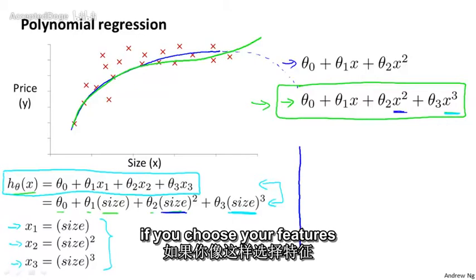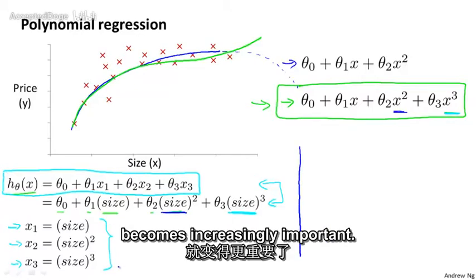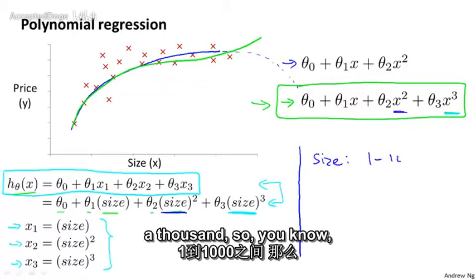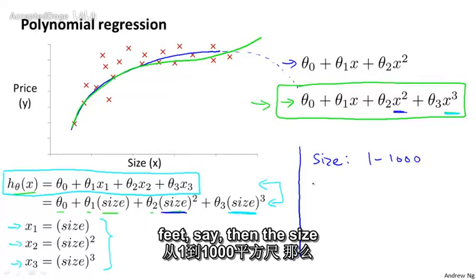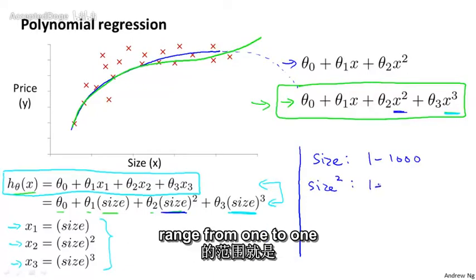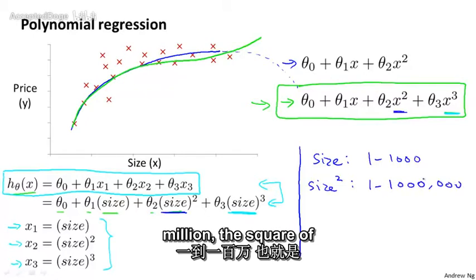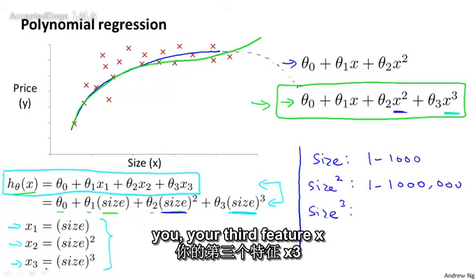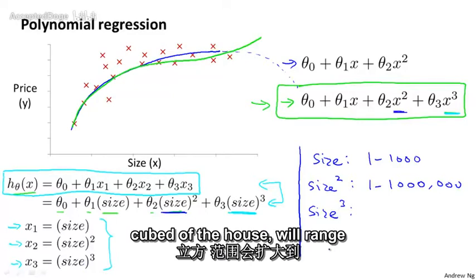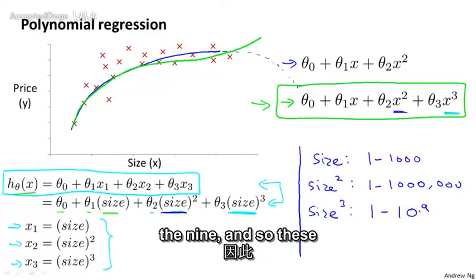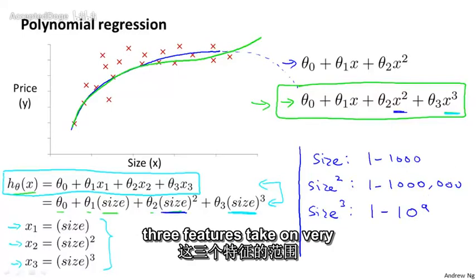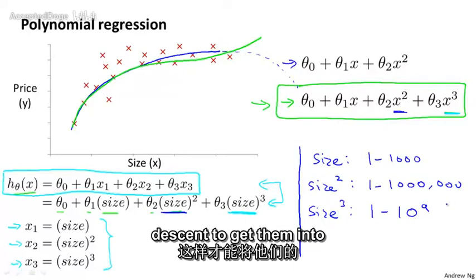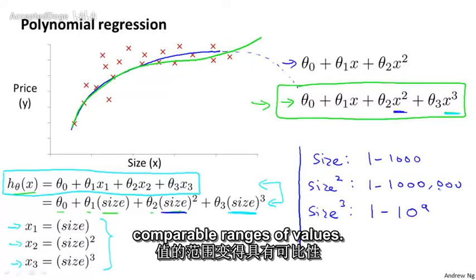I just want to point out one more thing, which is that if you choose your features like this, then feature scaling becomes increasingly important. So if the size of the house ranges from one to a thousand, so you know, from one to a thousand square feet, say, then the size squared of the house will range from one to one million. That's the square of a thousand. And your third feature x cubed, excuse me, your third feature x three, which is the size cubed of the house will range from one to ten to the nine. And so these three features take on very different ranges of values, and it's important to apply feature scaling if you're using gradient descent to get them into comparable ranges of values.